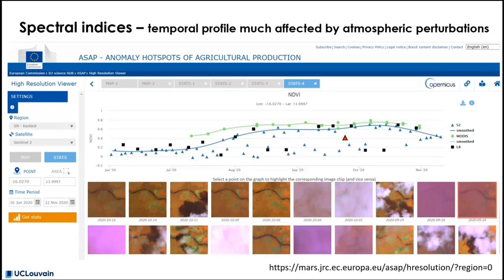As you will see on the Sentinel-2 playground, many images are covered by cloud or impacted by atmospheric perturbation like haze or aerosol. Here is an NDVI time series for an agricultural season in Senegal, as observed from three different satellites: MODIS at 250 meters in green, Landsat 8 at 30 meters in black, and Sentinel-2 at 10 meters in blue. The solid line follows the most cloud-free images, while all the blue triangles correspond to Sentinel-2 images largely affected by cloud. You can check in the image subset how often haze and cloud impact surface reflectance.